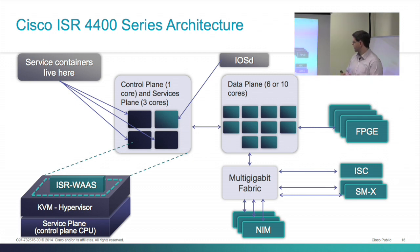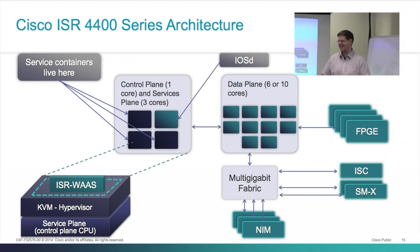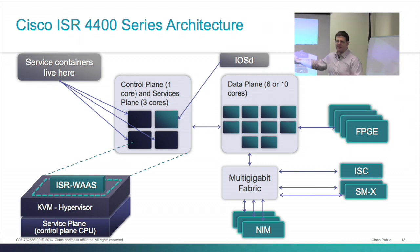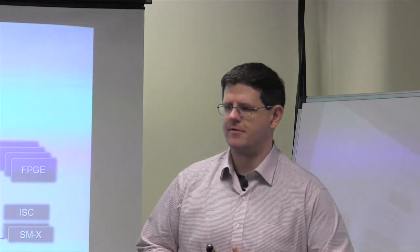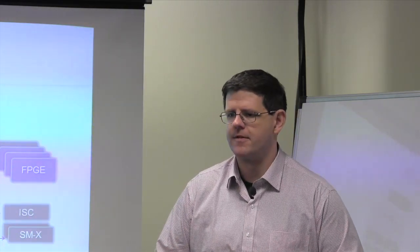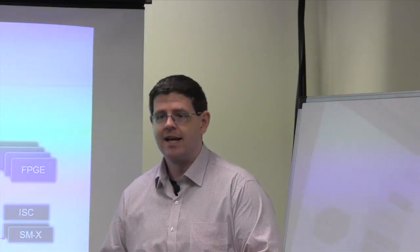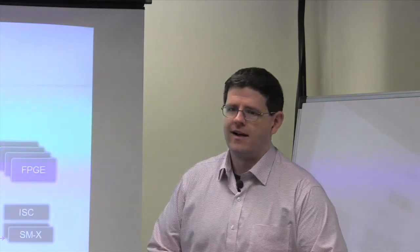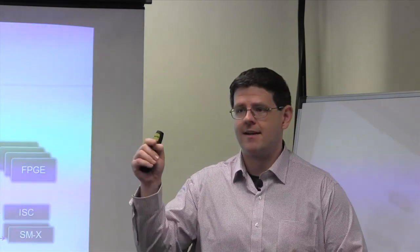The data plane handles all packet forwarding. There's a multi-gigabit fabric — essentially a Layer 2 switch inside the router — connecting all the modules. The reason for this Layer 2 switch is that any traffic staying local to the branch on the same VLAN should stay off the expensive data plane. For example, if you have a UCSE server inside the router with a video surveillance VM recording camera feeds, it makes sense for those cameras to go through the multi-gigabit fabric at Layer 2 rather than going all the way up to the data plane and back down.